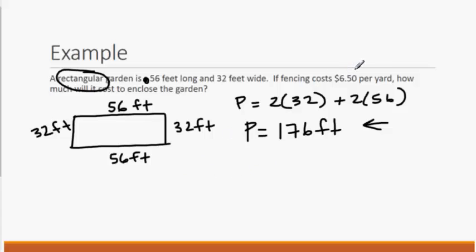So if it's $6.50 per yard, the first thing we need to do is to convert our feet to yards. So we can do this using dimensional analysis. 176 feet. There are 3 feet in 1 yard.